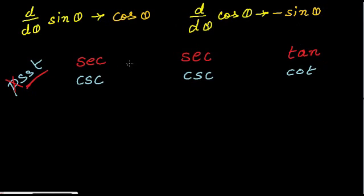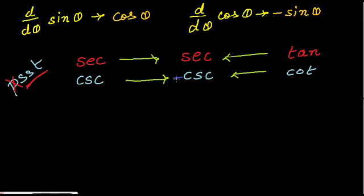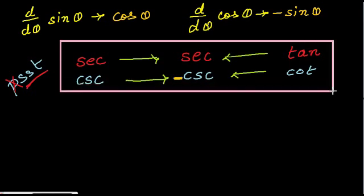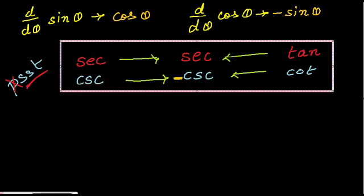Now you need to place the arrows pointing towards the middle. And the last step: for the middle cosecant, place a negative sign right in front of it. This gives you a simple, short, and useful table which will help you in your exams.